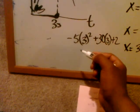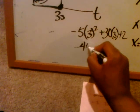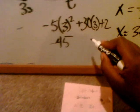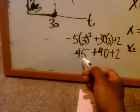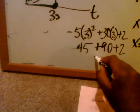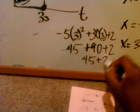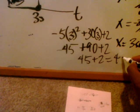3 squared is 9, times negative 5 is negative 45. 30 times 3 is 90, plus 2. Negative 45 plus 90 is positive 45, plus 2, which equals 47.